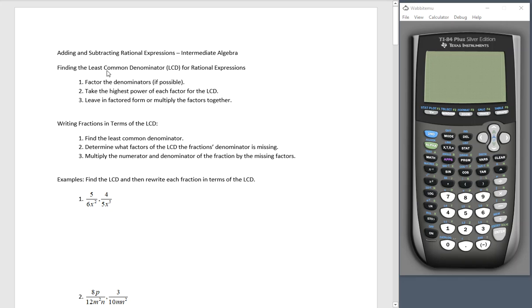In order to find the least common denominator, and I am one lazy mathematician, I'm going to call it LCD. Least common denominator for rational expressions. First of all, we're going to factor the denominators, only the denominators. Second, we're going to take the highest power of each factor for the LCD.